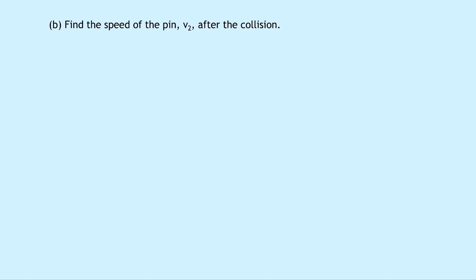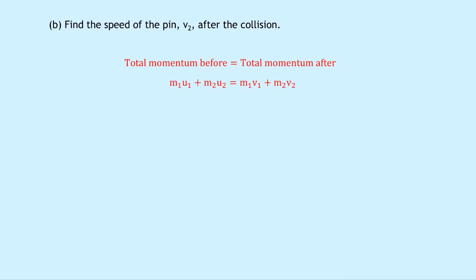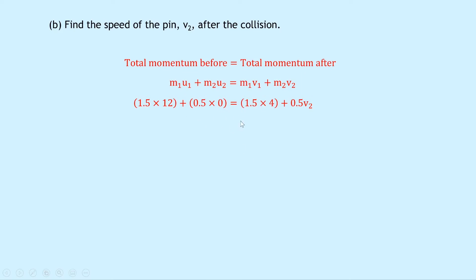Part B says to find the speed of the pin v2 after the collision. To do this we're going to use conservation of linear momentum: total momentum before equals total momentum after. In symbol form: M1U1 plus M2U2 equals M1V1 plus M2V2. Substituting in the numbers we get 1.5 times 12 plus 0.5 times 0 equals 1.5 times 4 plus 0.5 V2. The zero term cancels out, and rearranging gives us 0.5 V2 equals 12, so V2 equals 24 meters per second.